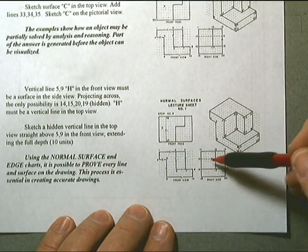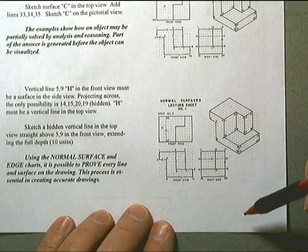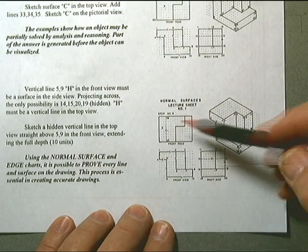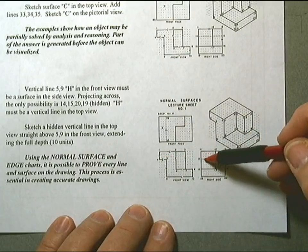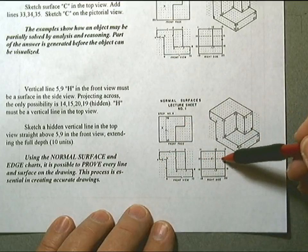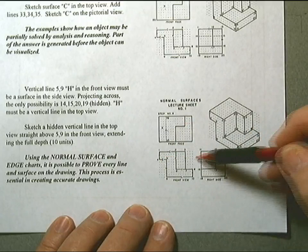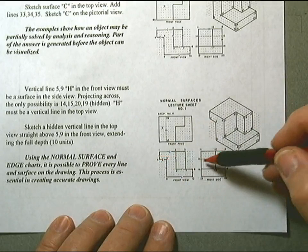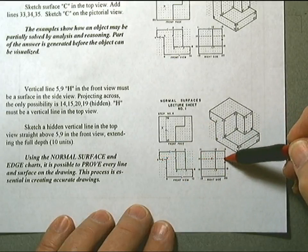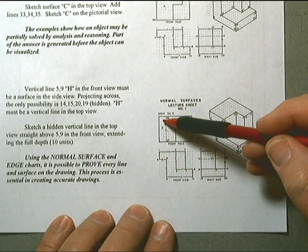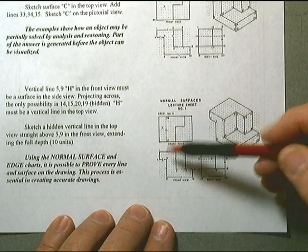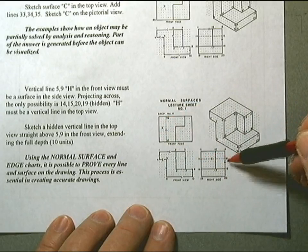We can see we have an edge here we haven't done anything with up to this point, and it matches up with this hidden edge all the way across, 14,15. So normal horizontal, normal horizontal should create a normal surface in the top view. It's this wide and this deep, so it would be an edge running all the way across.